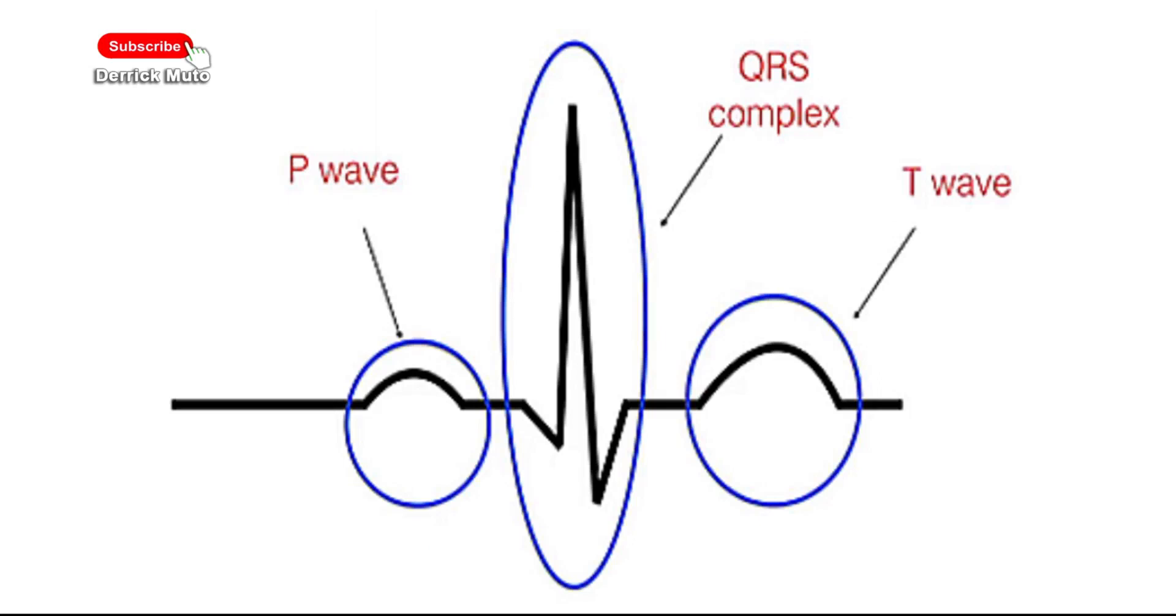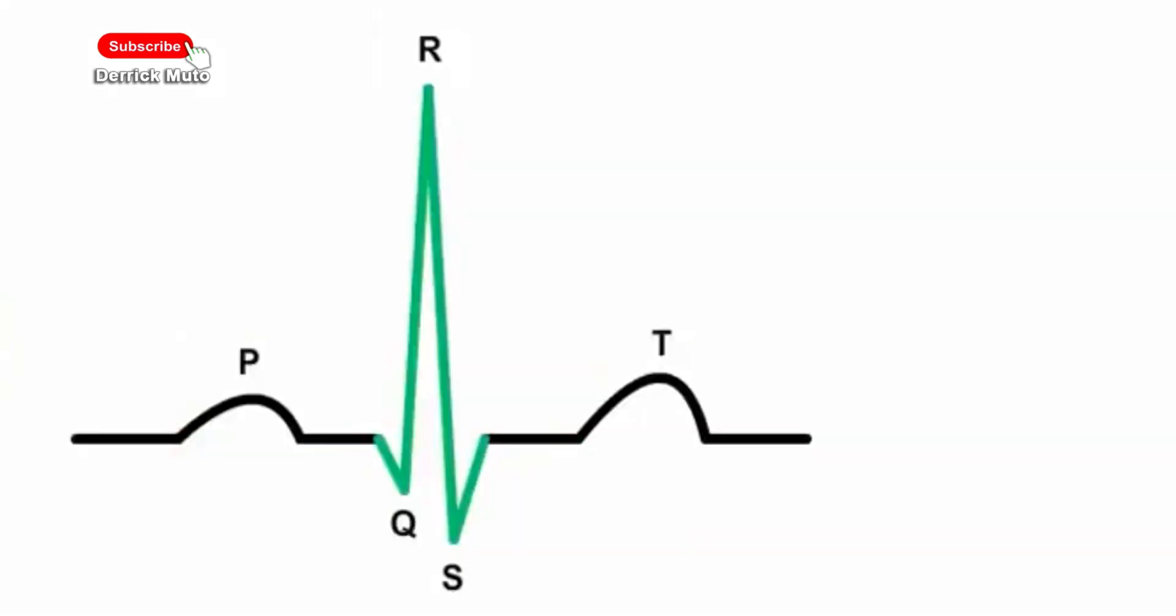This is too a positive wave and is the final wave in an ECG, though sometimes an additional U wave may be seen. The T wave represents ventricular relaxation or repolarization. It normally lasts for about 160 milliseconds.